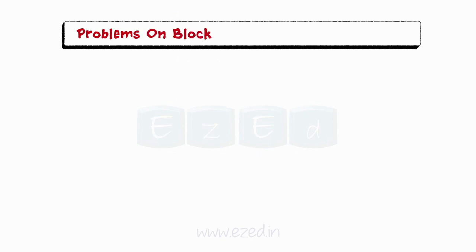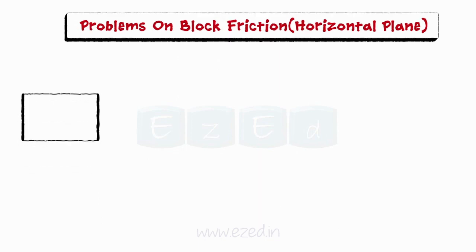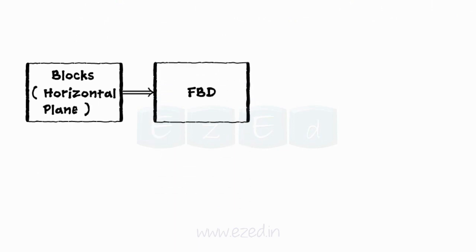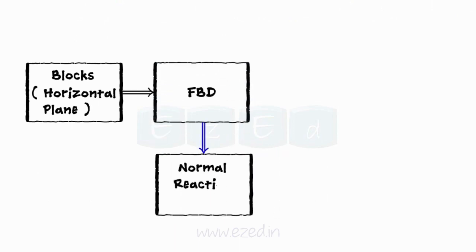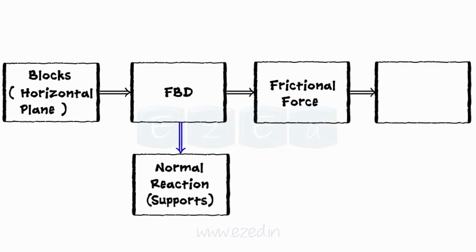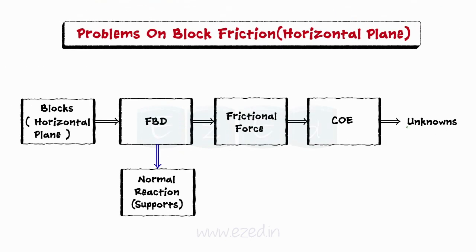Now we will learn to solve problems on block friction on horizontal planes. The following problems will be helpful to understand the concept behind frictional force in blocks on a horizontal plane. We draw the free body diagram of the block, show the normal reaction offered by the supports, compute the frictional force, and finally apply conditions of equilibrium to the system to calculate the unknowns.